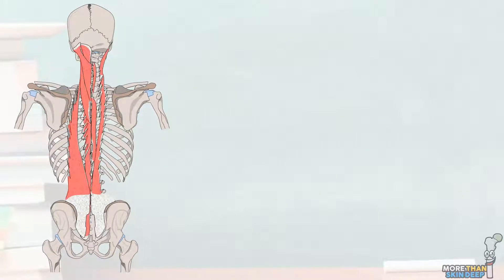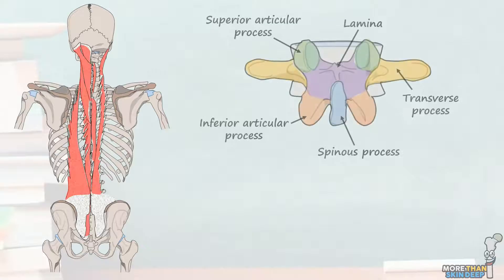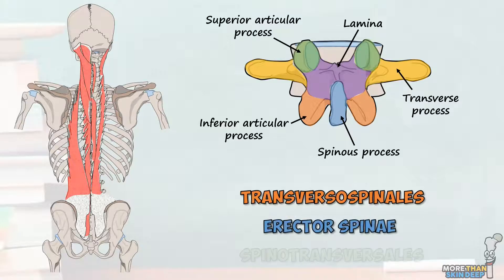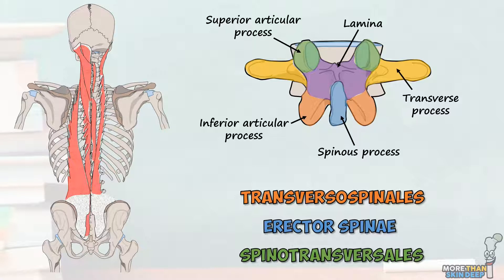In part one of our series on the back muscles, we covered the anatomy of the vertebral column, key features of the individual vertebrae and the occiput, and the anatomy of the three deep back muscle layers: transversospinales, erector spinae, and spinotransversales. If these are topics you're not especially familiar with, I'd suggest checking out our part one video on the back muscles before you engage with this one — we won't be recapping any of this content today.